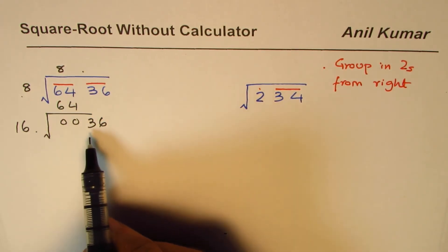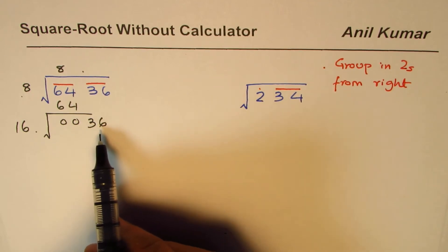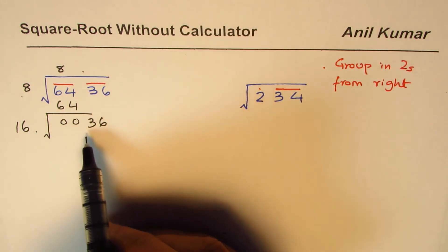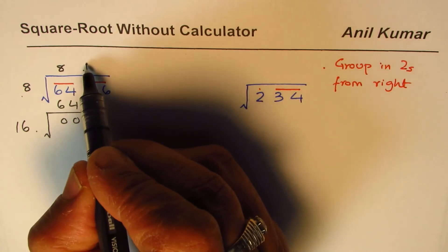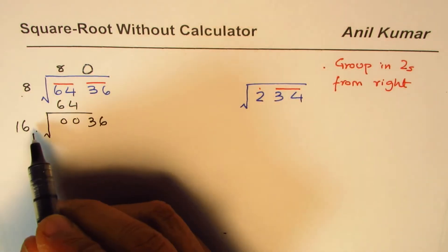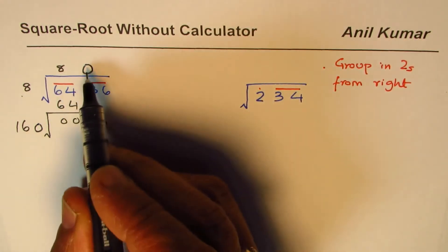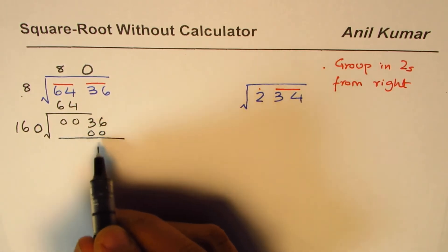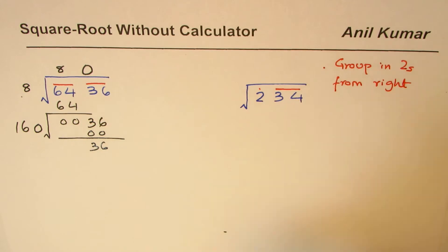Look for a number which can go into the same number on quotient and the divisor, which can go into the dividend - in this case 36. If I write any number here it's going to be greater than 36, so we have to place 0. 160 times 0 will give us 0, and you get 36 as the remainder.